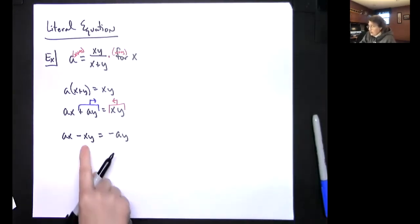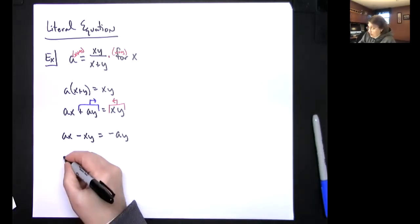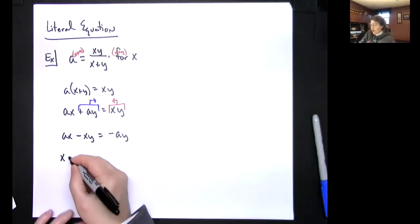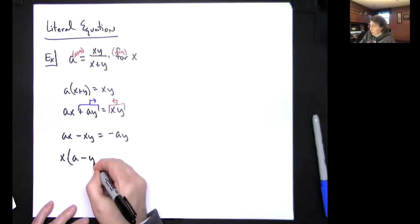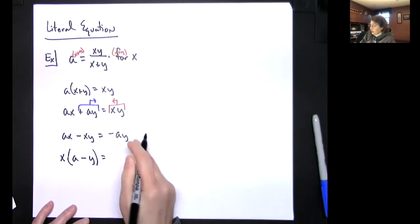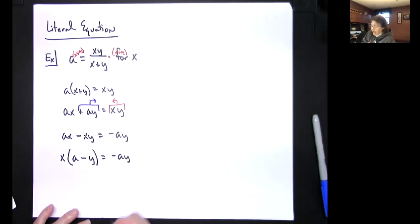Now I've got to solve for x. Right now it's in two individual terms, so let's factor x out. If I factor an x out, I'm going to have x times (a minus y) equals negative ay over here.